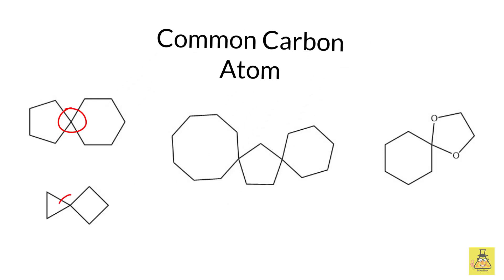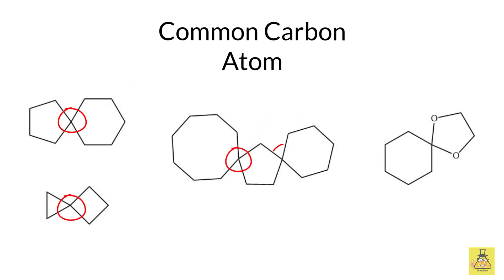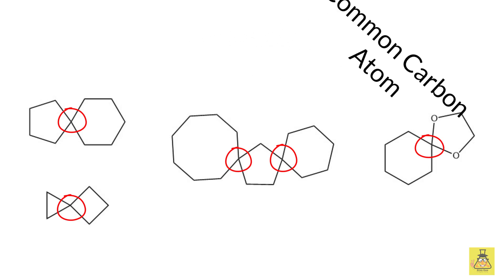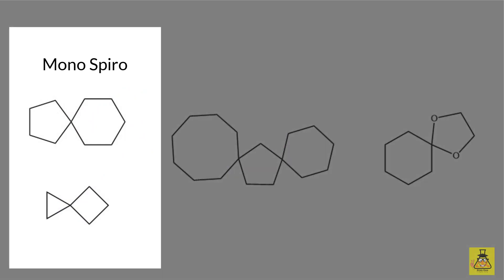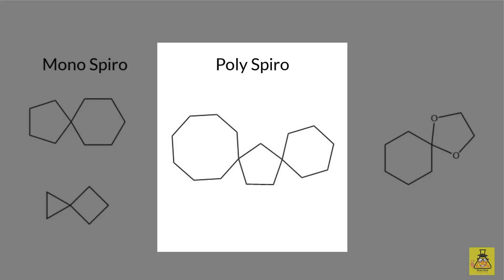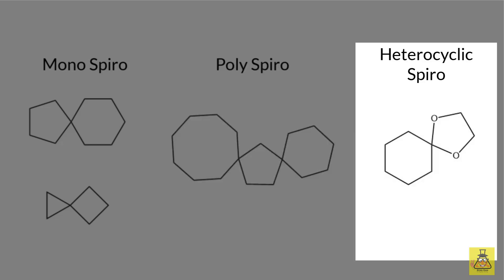Another thing we observe is that in these structures there are two or three rings linked together by one common carbon atom. This common carbon atom is known as a spiro atom. Please note that spiro compounds can be mono spiro, meaning they have only two rings and one spiro atom, or they can be poly spiro, containing three or more alicyclic systems, or they can also be heterocyclic if the spiro atom or any atom in either ring is not a carbon atom.